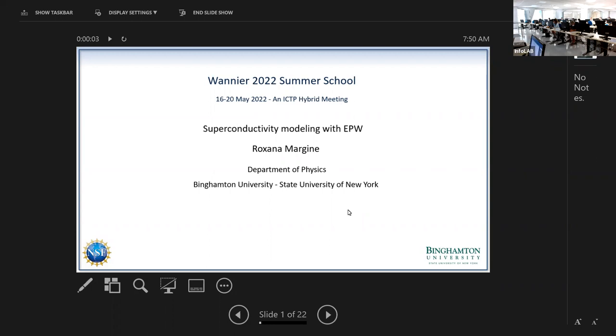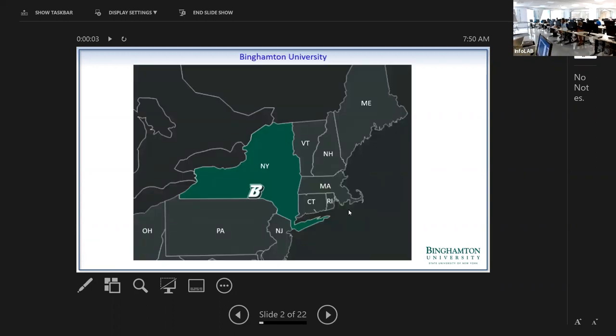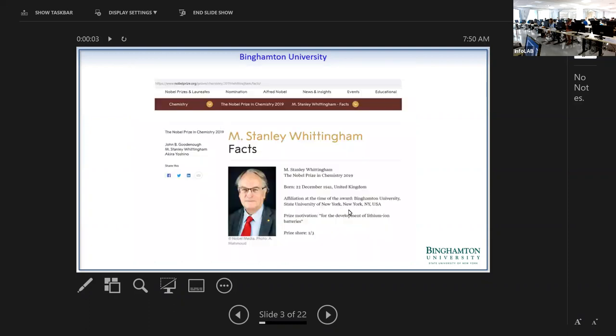Since a lot of people have asked what is Binghamton, just a quick view of New York State. This is New York, so we are somewhere here at the boundary with Pennsylvania. A couple of interesting things: IBM started in Binghamton, and that's where also the flight simulator was invented. The most recent thing is that in 2019, Professor Stanley Whittingham won the Nobel Prize in Chemistry along with John Goodenough and Akira Yoshino for his work on lithium-ion batteries.